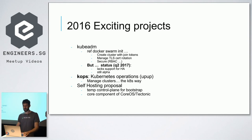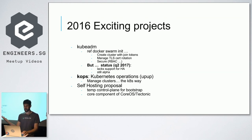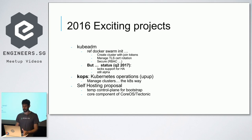Kubeadm was announced not long after Docker announced Swarm, to automate a lot of the bootstrap process including managing TLS certificates. However, when we were looking at revamping our bootstrapping process, kubeadm had no support for high availability and was still in alpha, so we had to discard that option.